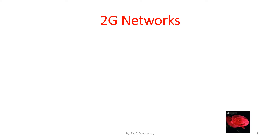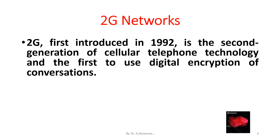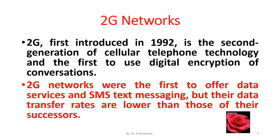2G, first introduced in 1992, is the second generation of cellular telephone technology and the first to use digital encryption of conversations. 2G networks were the first to offer data services and SMS text messaging, but their data transfer rates are lower than those of their successors — 3G networks — where data transfers are in the order of kbps, that is kilobits per second.